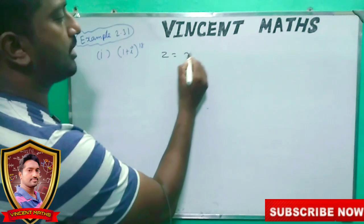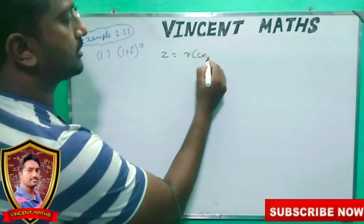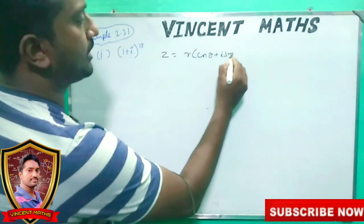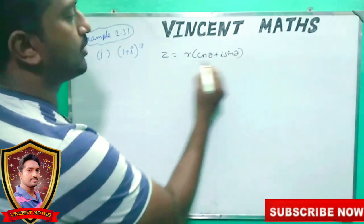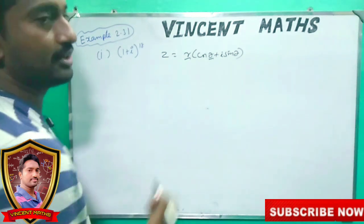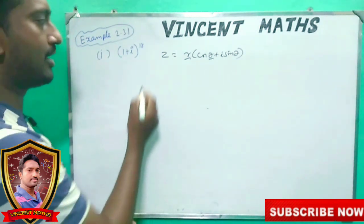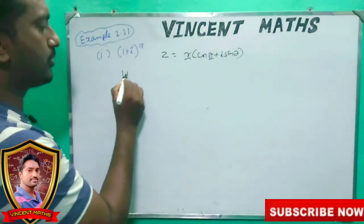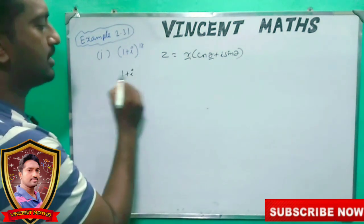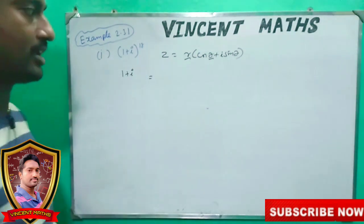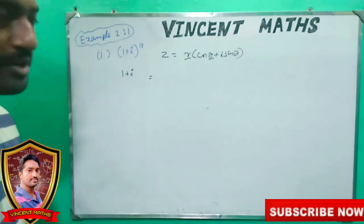z equals r, and this is cosθ plus i sinθ with theta value. That's because z without the value gives 1 plus i power. Then you won't have to substitute. It's called polar form.